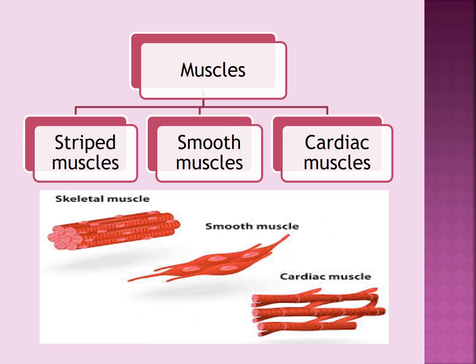Muscles can be classified into three types: striped muscles, smooth muscles, and cardiac muscles. As you can see in the picture, the three muscles are of different structures and they also have different functions, which we will read in the next slide.